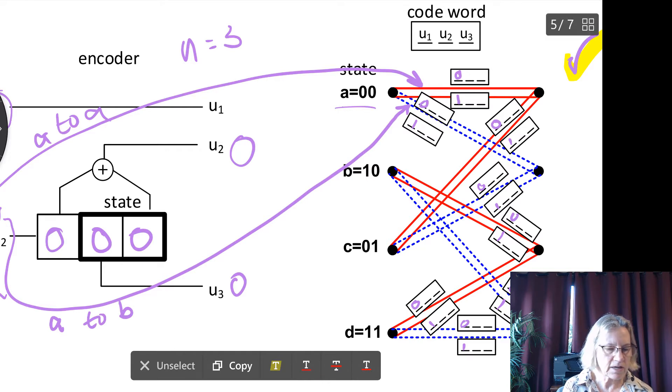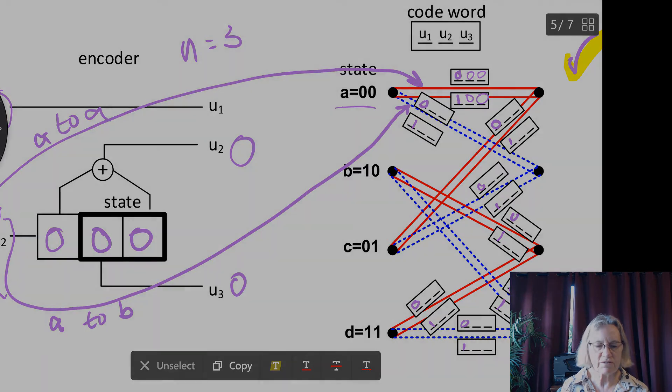So I could quite easily, let's make this a little finer, put that the code word would be 0, 0 and 0, 0 for this transition from A to A.